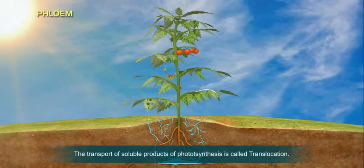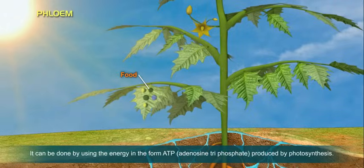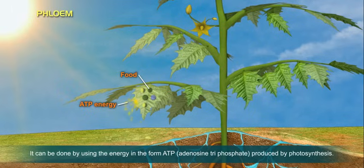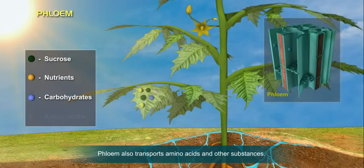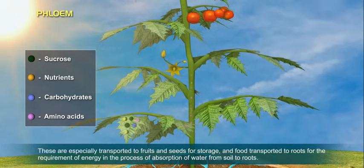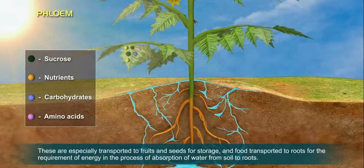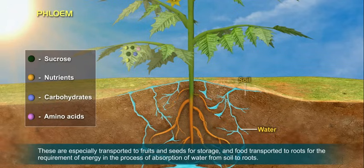The transport of soluble products of photosynthesis is called translocation. It is carried out using energy in the form of ATP — adenosine triphosphate — produced by photosynthesis. Phloem also transports amino acids and other substances. These are especially transported to fruits and seeds for storage, and food is transported to roots for the energy requirement in the process of absorption of water from soil.